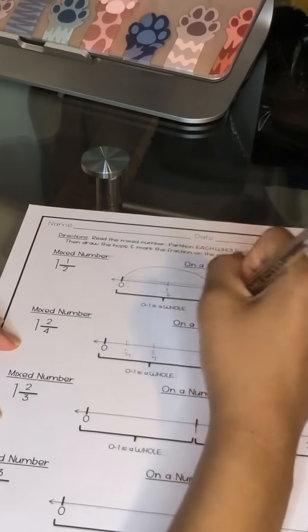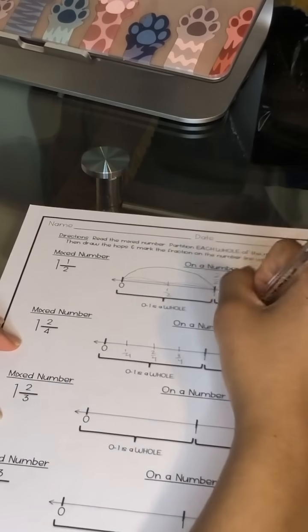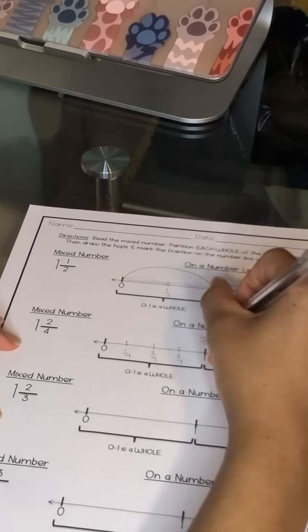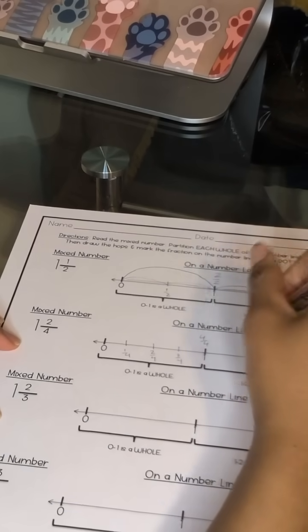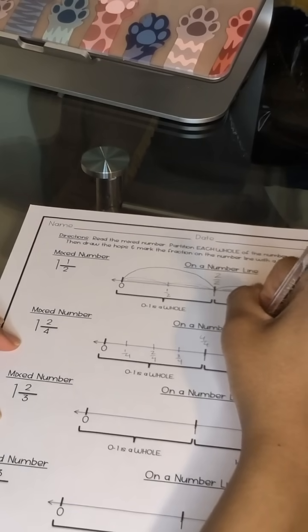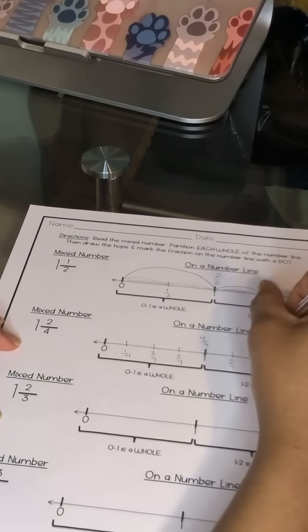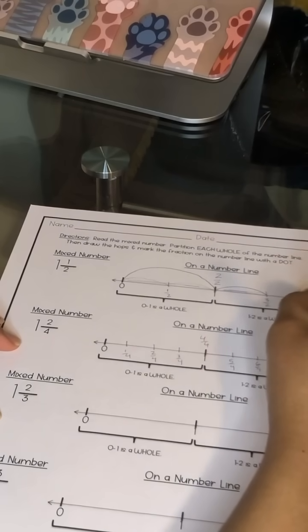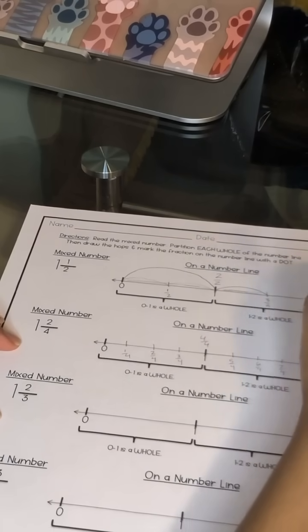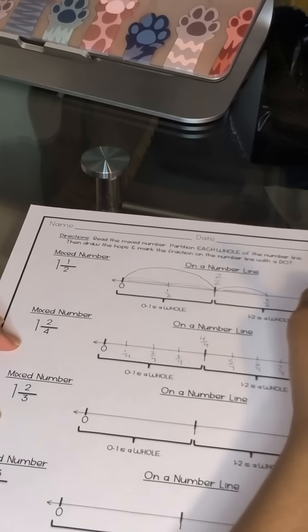One fourth, two fourths, three fourths, four fourths for our one whole, five fourths, six fourths, seven fourths, and eight fourths.